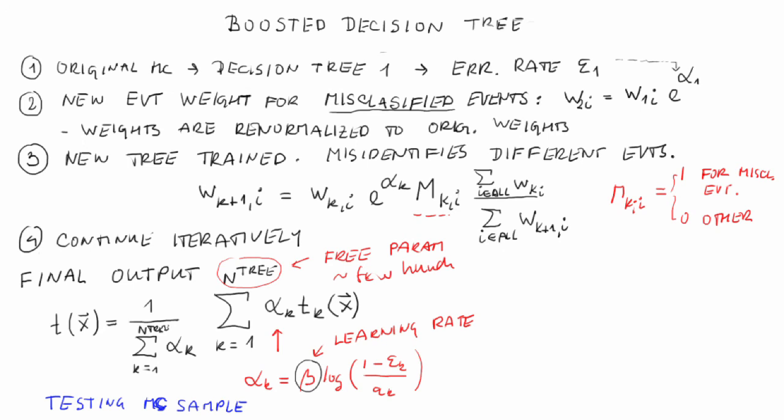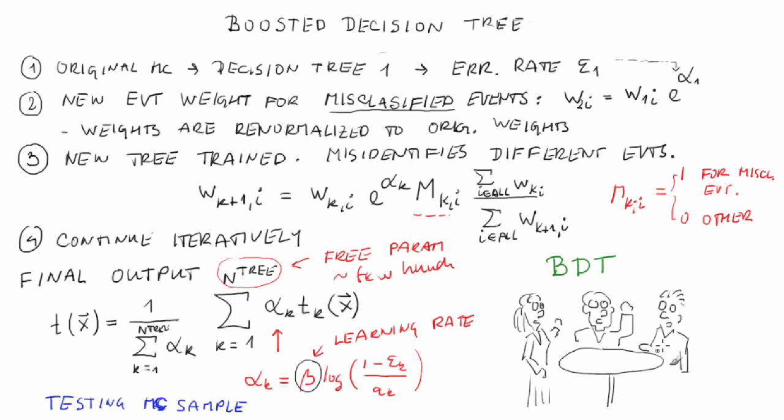The most important thing in the end: Boosted decision tree is abbreviated to BDT and you will hardly ever hear the full name. Its output is typically called BDT score or simply just BDT. BDT is a very popular multivariate method in particle physics. When going through CERN, you will hear BDT, BDT, BDT at each corner.